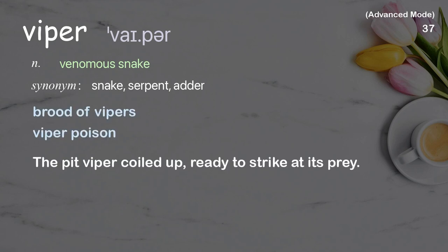Examples: brood of vipers, viper poison. The pit viper, coiled up, ready to strike at its prey.